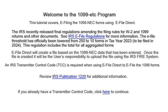Welcome to the 1099-ETC program. This tutorial covers e-filing the 1099-NEC forms through e-file direct. The IRS recently released final regulations amending the filing rules for W-2 and 1099 returns and other documents. See the IRS e-file regulations for more information. The e-file threshold has officially been lowered from 250 to 10 forms in tax year 2023, to be filed in 2024. This regulation includes the total for all aggregated forms.